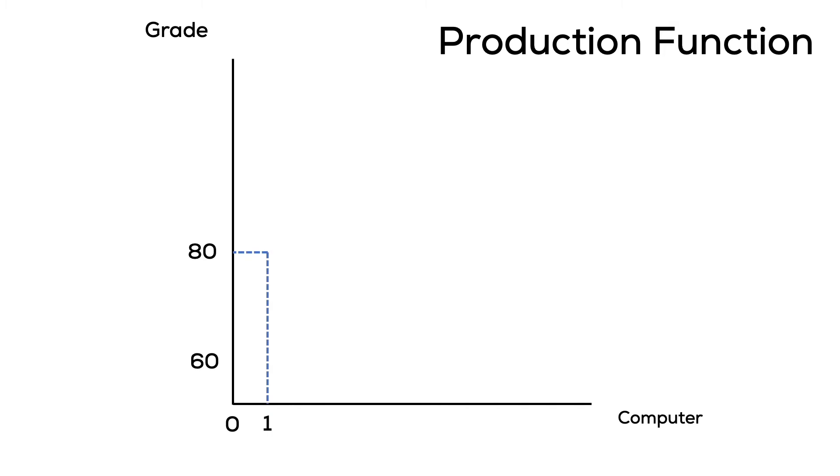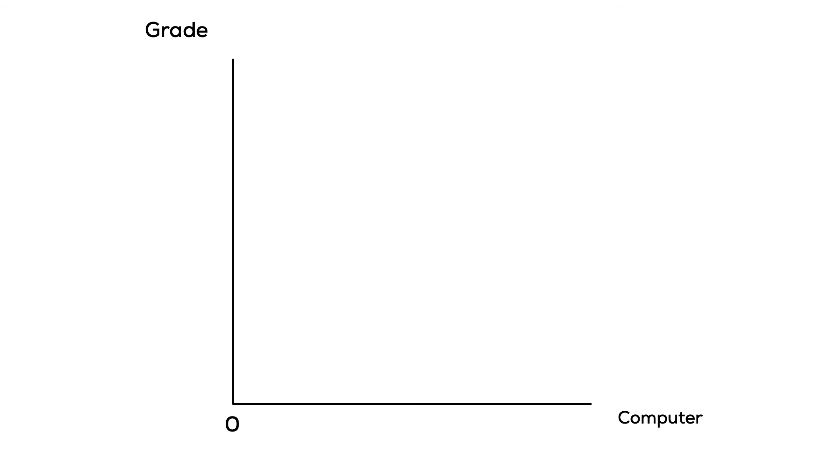Now, what if that student received a second computer? What is the marginal product of that second computer — what is the change to the grade it provides? We know the first computer provided 20 percentage points. The second computer is not going to add another 20. There is a benefit — having a second computer might let you use each for different purposes — but the additional gain might only increase your grade by 10 percentage points. So the marginal product of the first computer was 20 points, but the marginal product of the second computer is only 10.